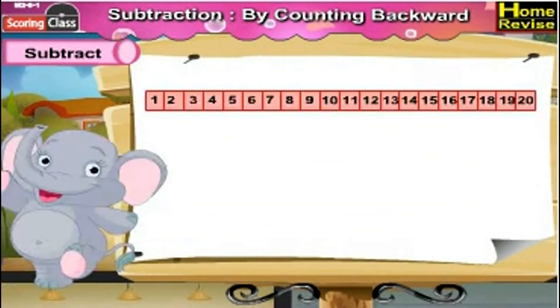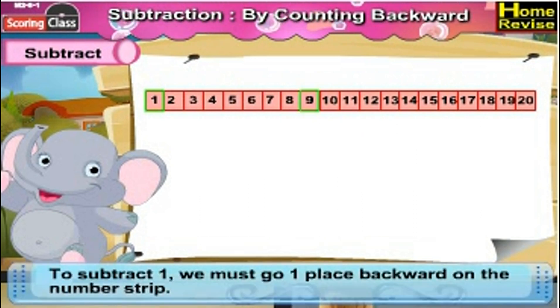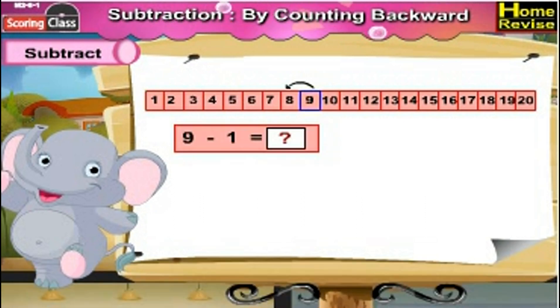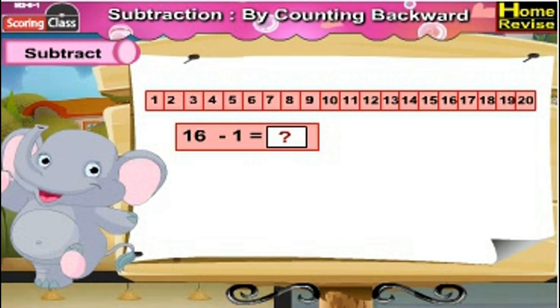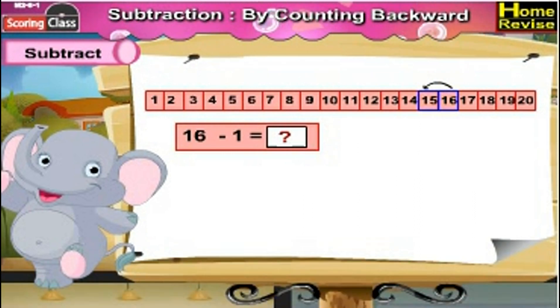Subtraction by counting backward. Now here you can find the numbers from 1 to 20. If we want to subtract 1 from 9, we must go one place backward on the number strip. So 9 minus 1 would be 8. Now 16 minus 1: to subtract 1 we must go one place back from 16, so 16 minus 1 is 15.